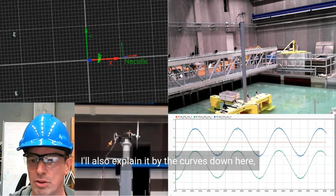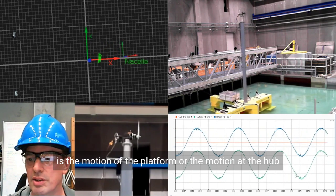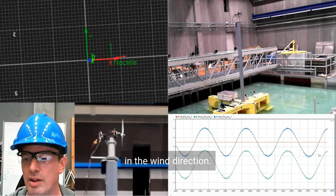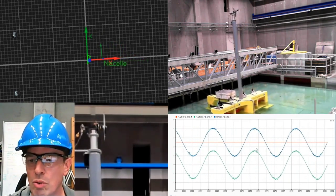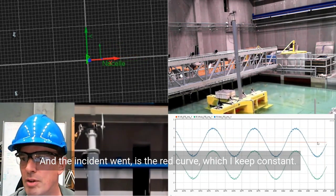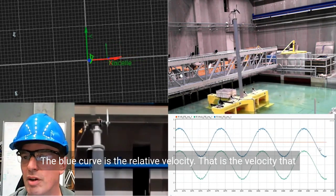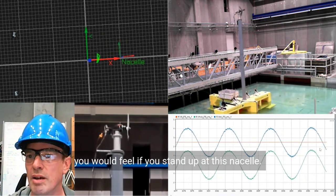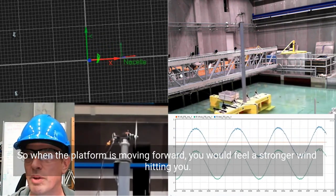I will also explain it by the curves down here. The green curve is the motion of the platform or the motion at the hub in the wind direction. The incident wind is the red curve which I keep constant. The blue curve is the relative velocity.